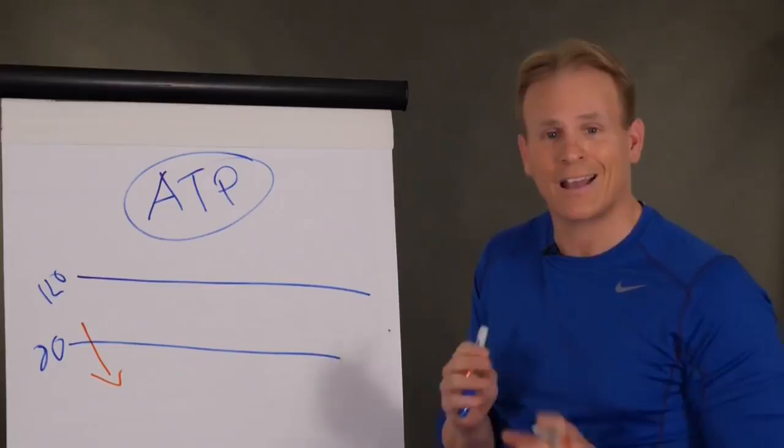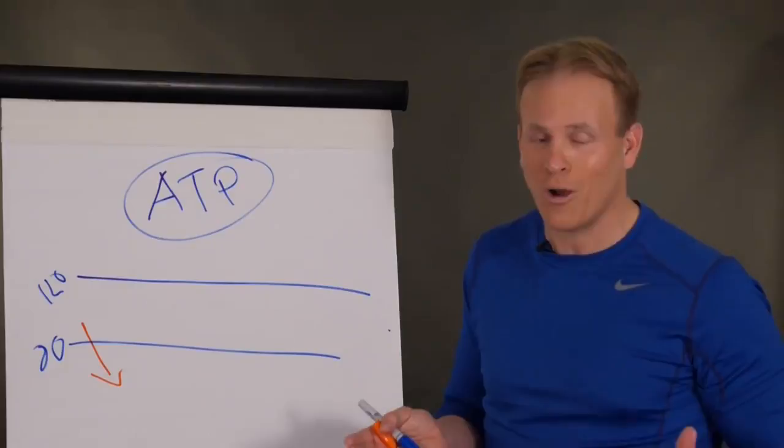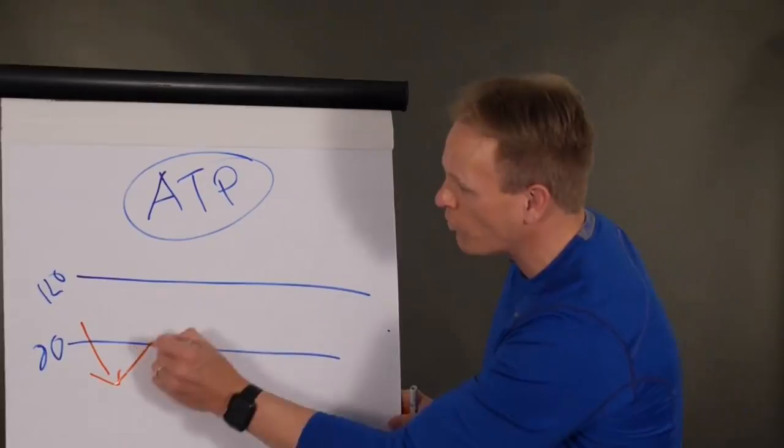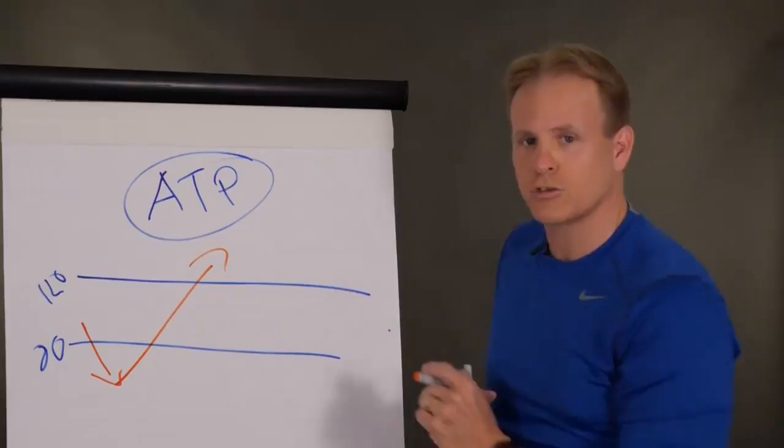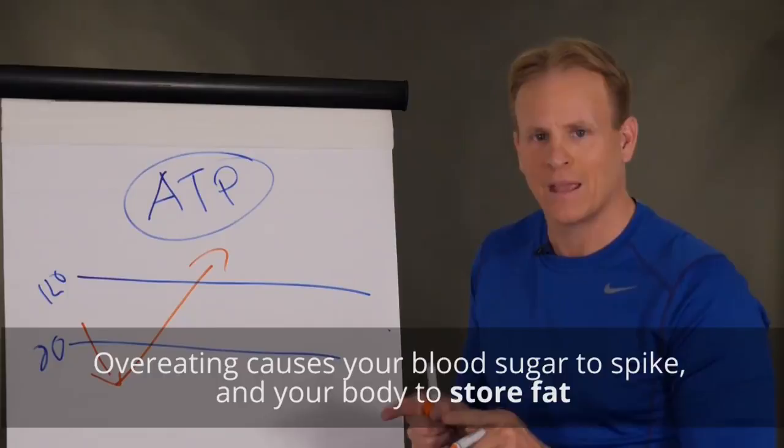Then that next meal, you don't crave your favorite proteins, chicken, fish, or beef, no. We crave carbohydrates, because glucose is what makes ATP. So then you over-eat, you get that bread on the table. You have those excess carbohydrates, and your blood sugar spikes. You over-release a hormone called insulin, and you store fat.